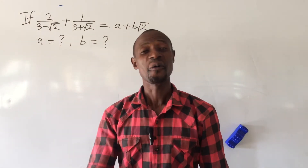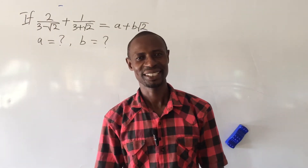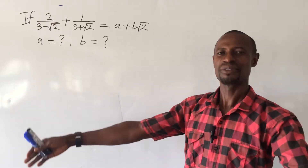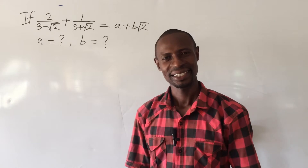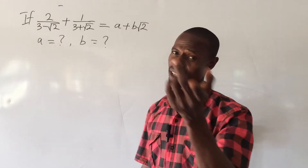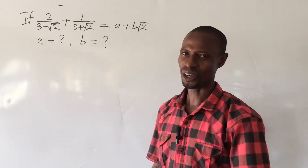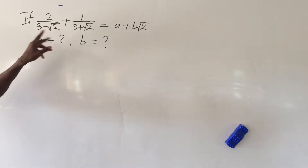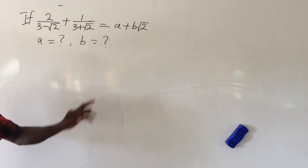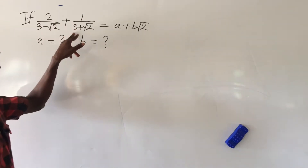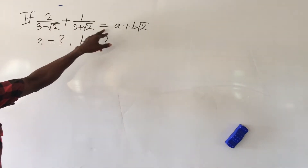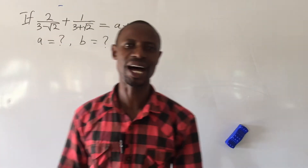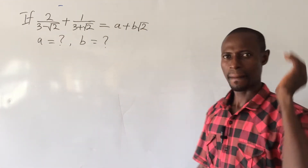Welcome to Online Mass TV. My name is Jakes Animal and here we draw videos every day. Today's challenge is a simple one: if 2 all over (3 minus root 2) plus 1 all over (3 plus root 2) equals a plus b root 2, what will be the value of a and b?